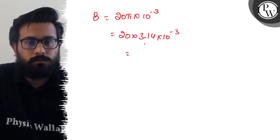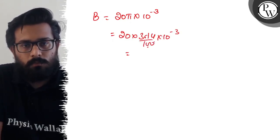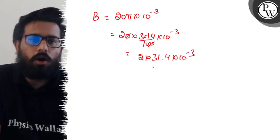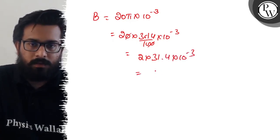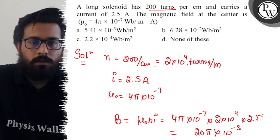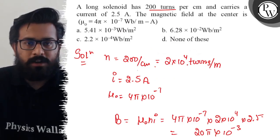So it comes out with 2 × 31.4 × 10^-3. Or you can write it like 62.8 × 10^-3.